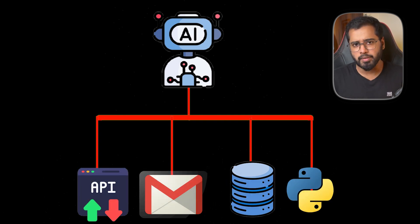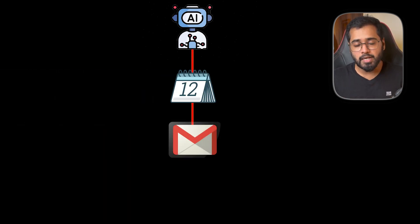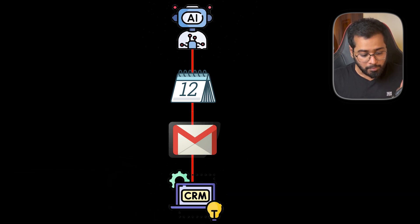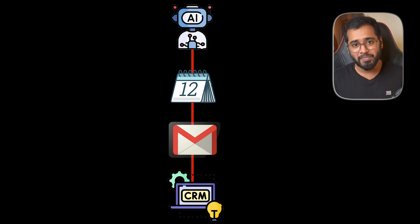For example, imagine an AI agent gets a task to book a meeting. Just like a human, it can check your calendar, send an email invite, and update the CRM — all automatically. That is the power of LangChain agents: they can use the right tool for each and every single step.